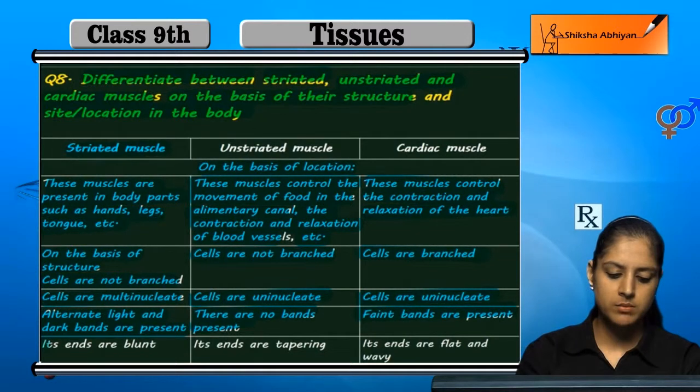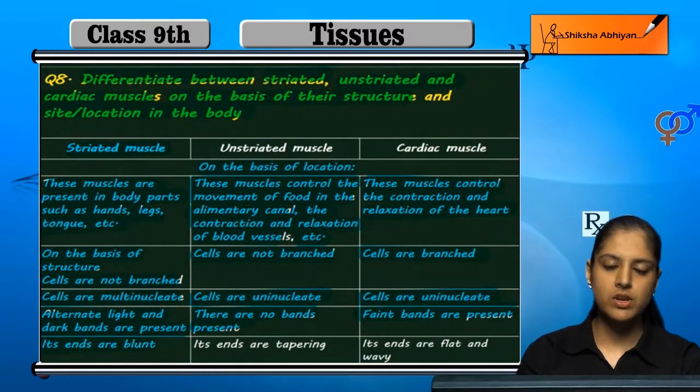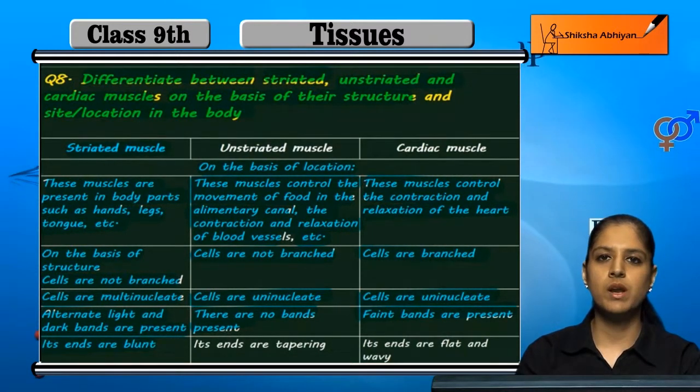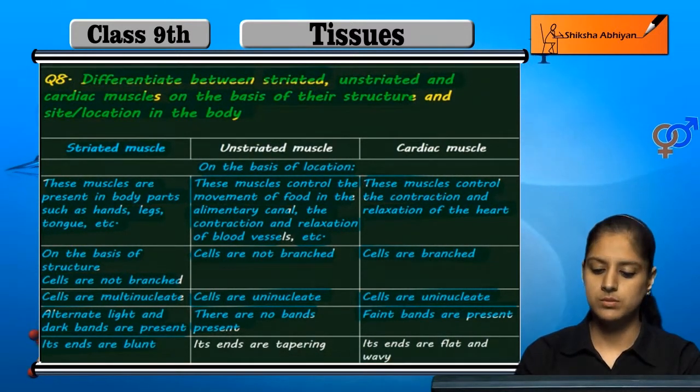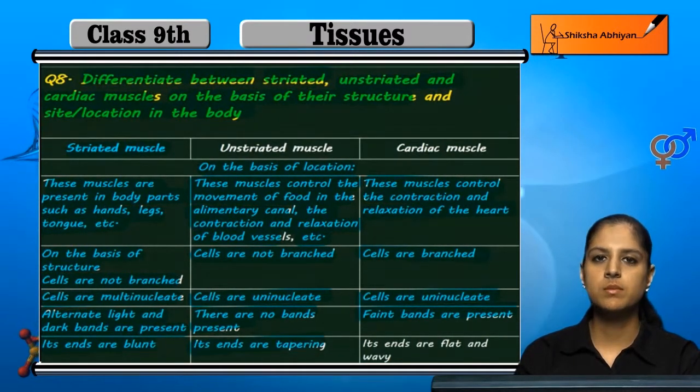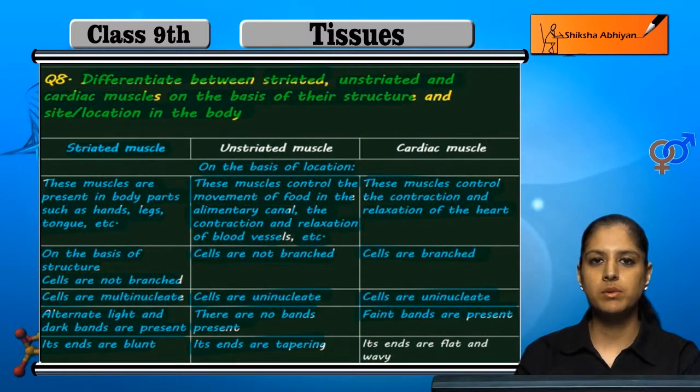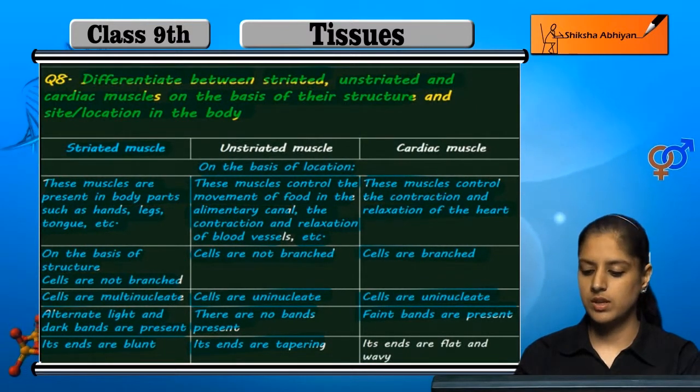The striated muscles are blunt at the ends. The unstriated muscles are tapered.